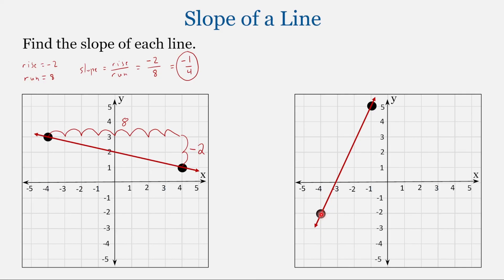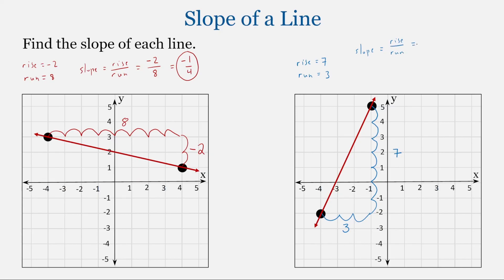With this last problem: 1, 2, 3 — our run value is positive 3. Then 1, 2, 3, 4, 5, 6, 7 — our rise value, the vertical change, is positive 7. So rise equals 7, run equals 3, and slope equals rise over run: 7 over 3. This is a positive slope, and this line is going up as we move from left to right.